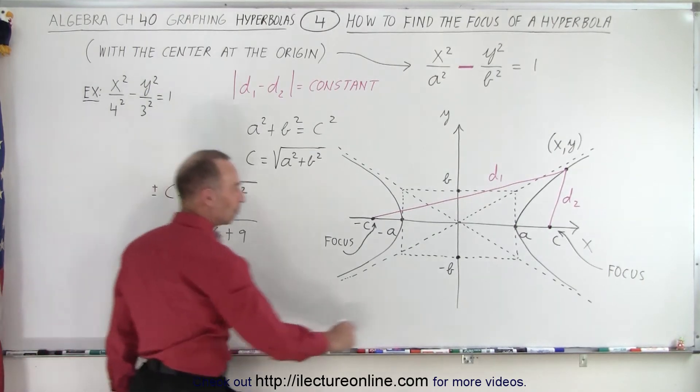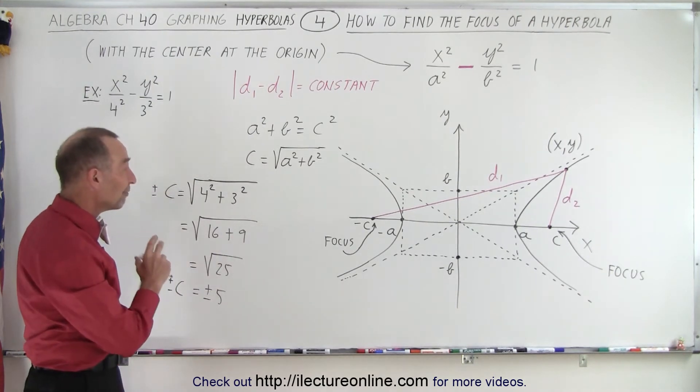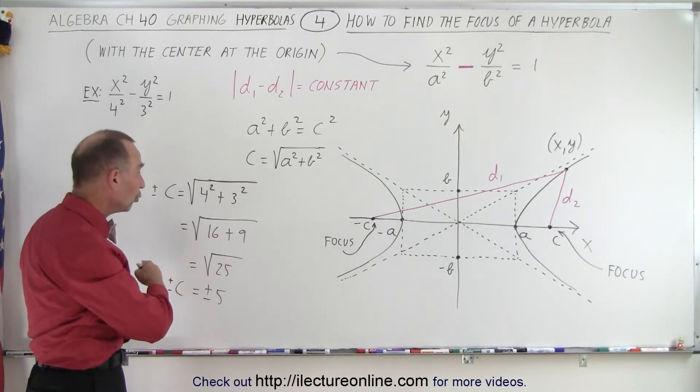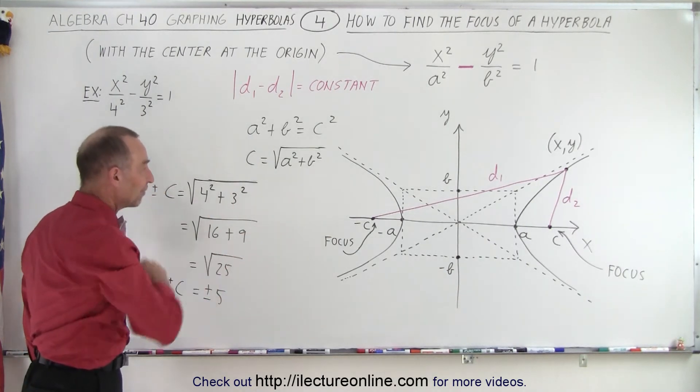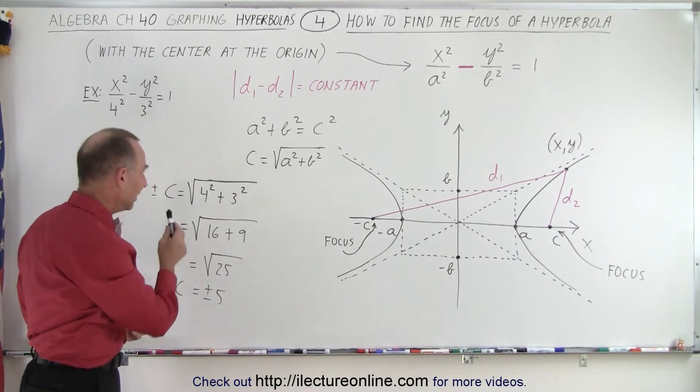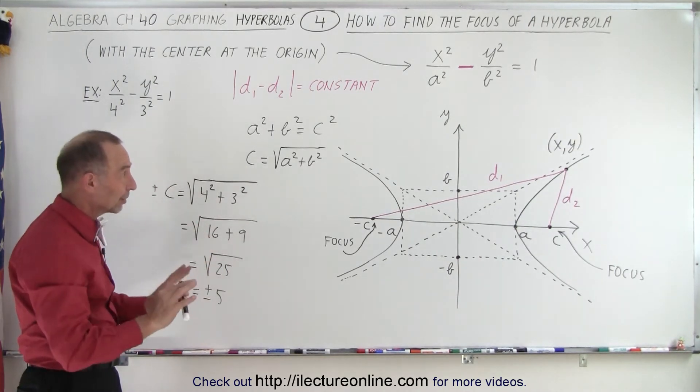Because we do have a plus c and a minus c if we want to be exact about it. But that is how you find the distance from the origin to either one of the foci. It's either 5 units to the right or 5 units to the left from the origin, and this is how we find that.